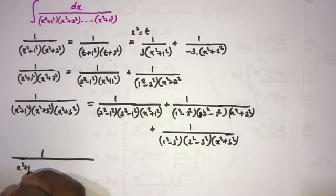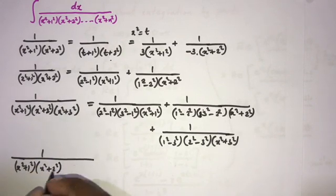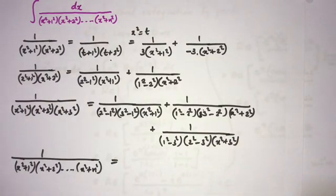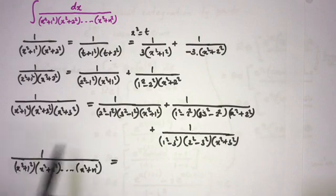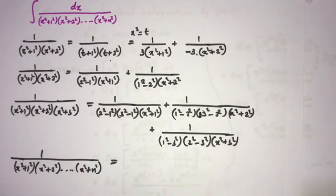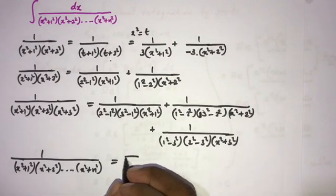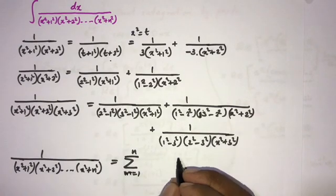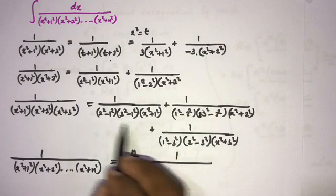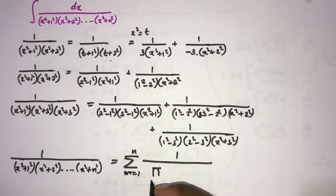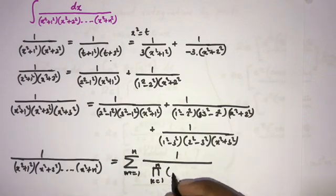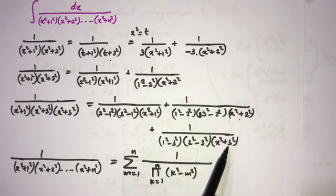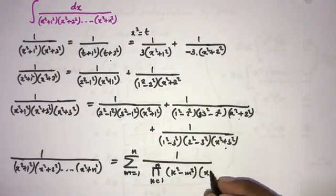For the general case, 1 over (x²+1²)(x²+2²)...(x²+n²), we can write the partial fractions using sigma and product notation as: the sum from m=1 to n of 1 over [the product of (k²-m²) for k=1 to n, k≠m] times (x²+m²).